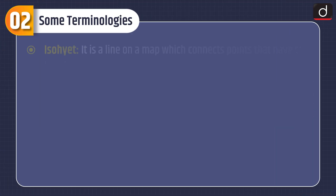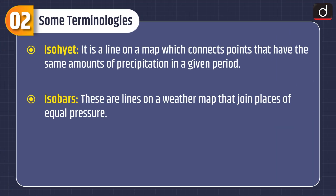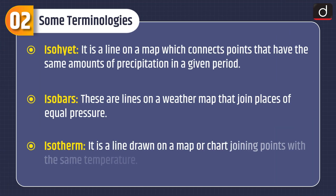Now moving on to some terminologies. Isoheight is a line on a map which connects points that have the same amounts of precipitation in a given period. Isobars are lines on a weather map that join places of equal pressure. Isotherm is a line drawn on a map or chart joining points with the same temperature.